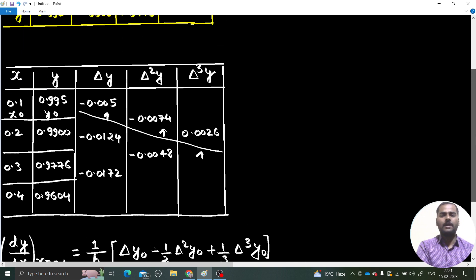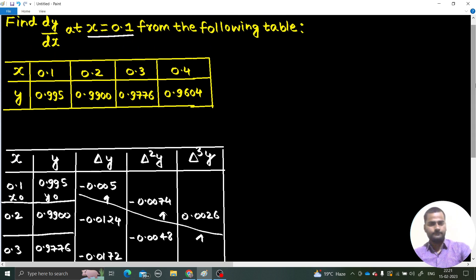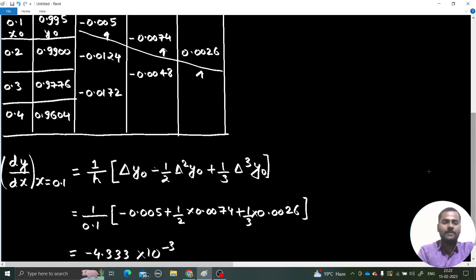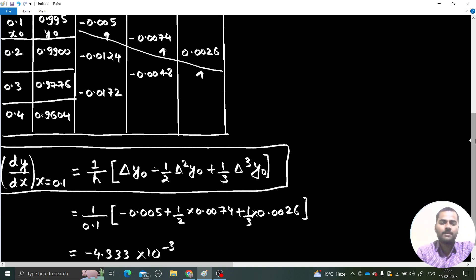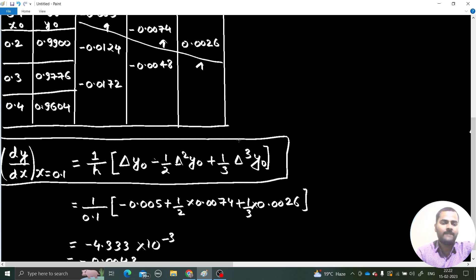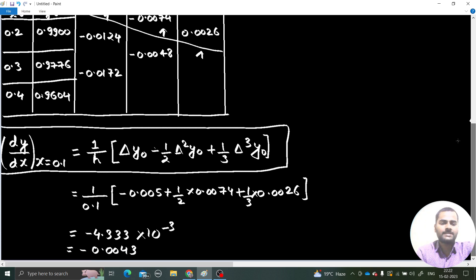I hope you understood it today. Very simple. Whenever the point at which derivative they are asking is in the table, use this simple formula. This is the simple formula which we will be using. Difference table you all know how to make. Make the difference table and plug in the values in this formula and you are going to get the answer. H is nothing but the difference in the x values. I hope you understood this. I will see you in some more videos. Thanks again.